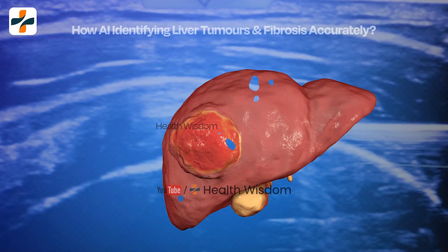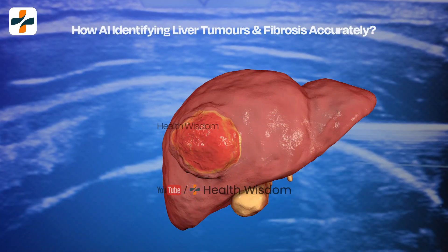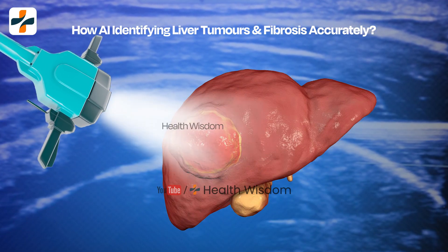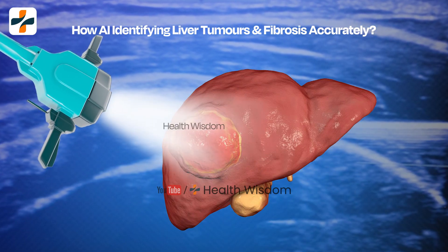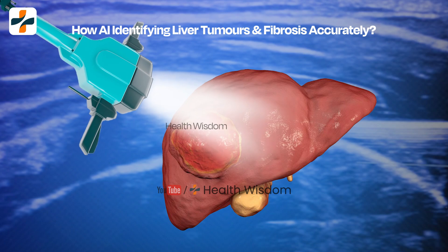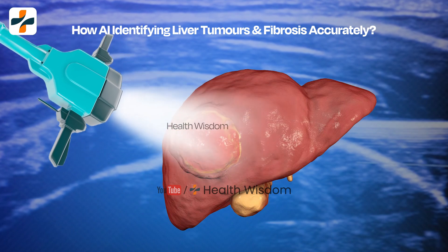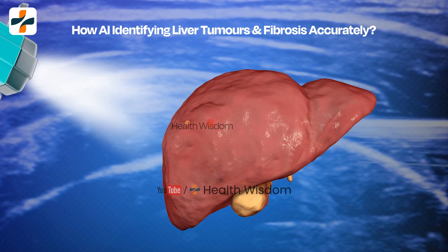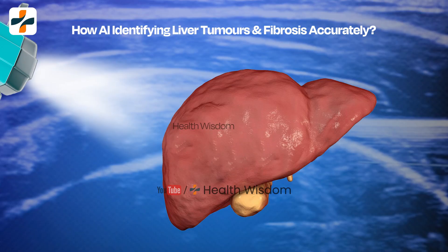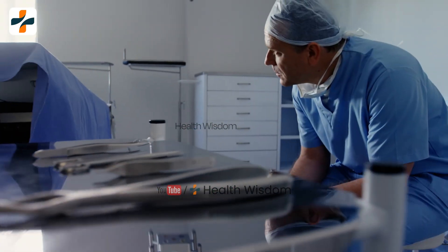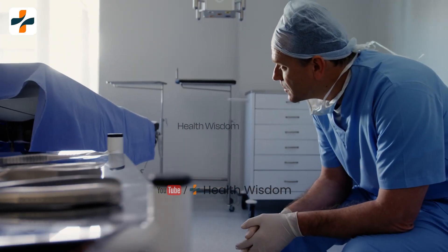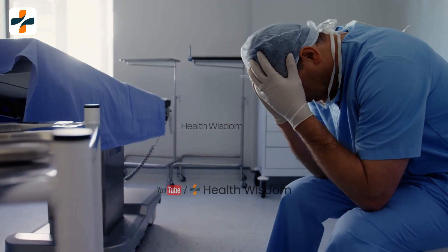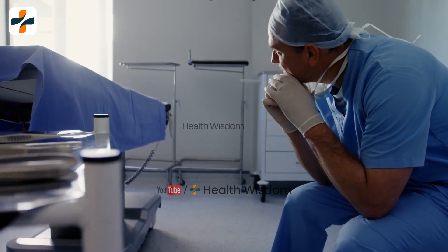How AI identifies liver tumors and fibrosis accurately: AI can analyze liver ultrasound images to automatically identify signs of liver tumors and fibrosis. This not only reduces the workload of doctors but also improves the efficiency and consistency of diagnosis.